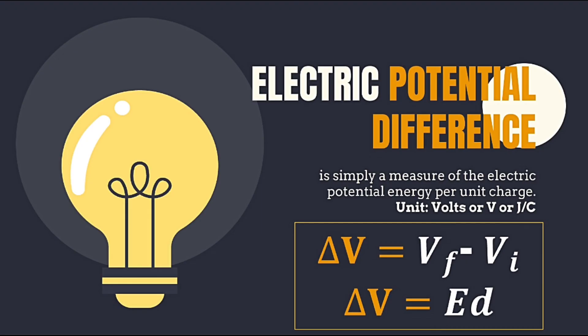This is how we get the work done using the electric potential difference between two points. To summarize: electric potential difference is the electric potential energy per unit charge, expressed as delta V equals VF minus VI, or delta V equals E·delta D.